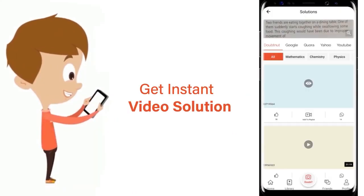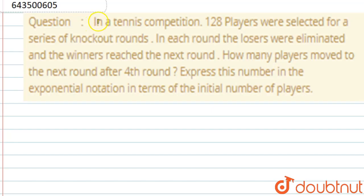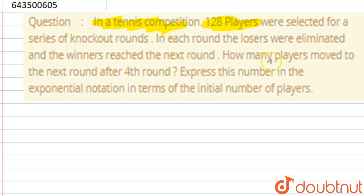In a tennis competition, 128 players were selected for a series of knockout rounds. In each round, the losers were eliminated and the winners reached the next round. How many players moved to the next round after the fourth round? Express this number in exponential notation.